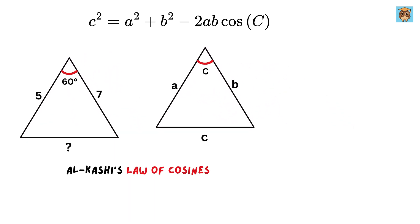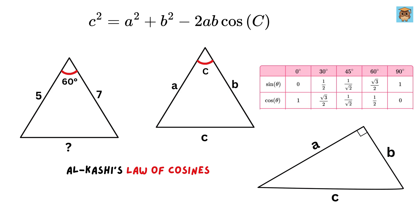And here's the beauty of this theorem. If angle C is a right angle, or 90 degrees, then using the trigonometric table, we all know that the cosine of 90 degrees is simply 0. So this term becomes 0, and we are left with C squared equals A squared plus B squared, which is none other than Pythagoras' theorem.